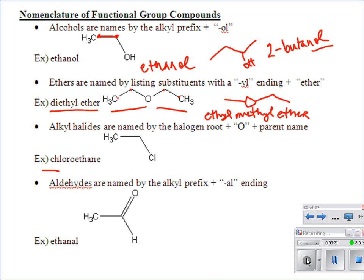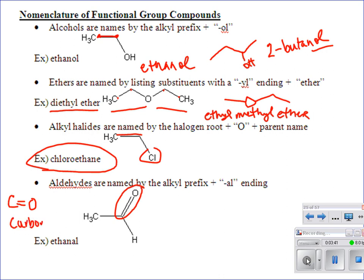Alkyl halides — we already covered this. It's not a functional group per se; it's just naming the alkane with the halogen as a substituent group, like chloro. Now moving to aldehydes: the carbonyl group — C double bonded to O — is found in both aldehydes and ketones.